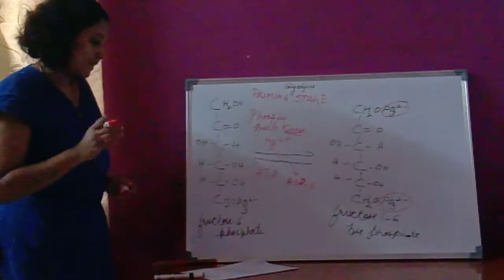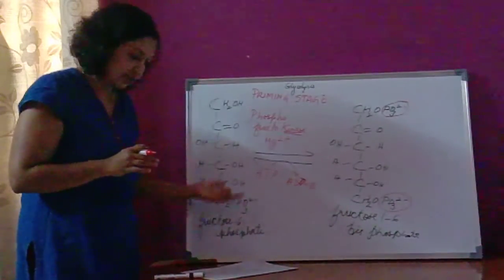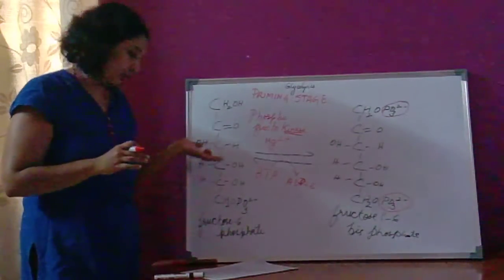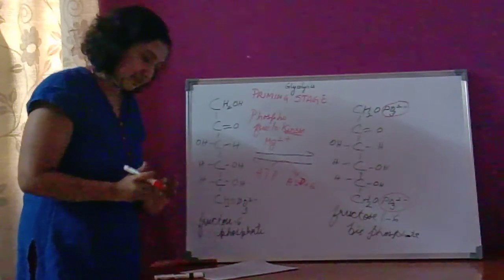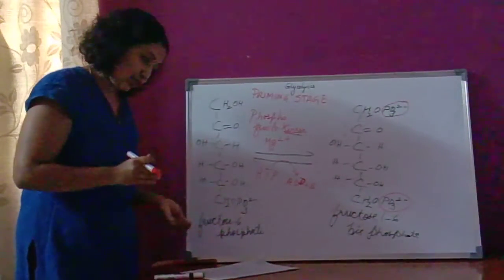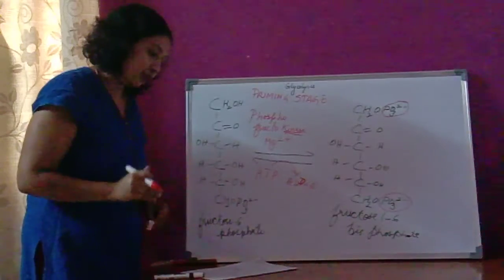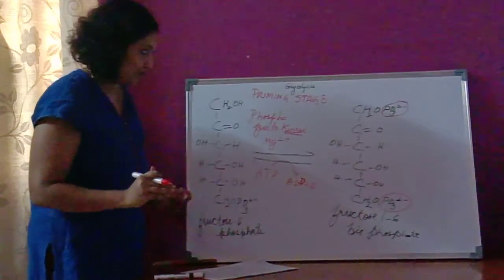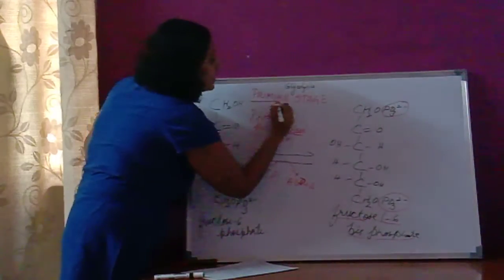Let me go through it slowly. First, glucose gets converted to glucose 6-phosphate in the presence of the enzyme hexokinase — phosphorylation takes place there. Second, glucose 6-phosphate gets converted to fructose 6-phosphate, where the isomerase enzyme acts. Then fructose 6-phosphate gets converted to fructose 1,6-bisphosphate, where the enzyme involved is phosphofructokinase and phosphorylation takes place. So till the formation of fructose 1,6-bisphosphate, it is the priming stage.